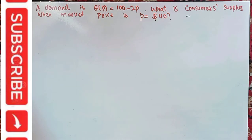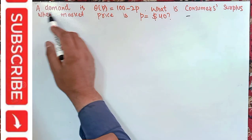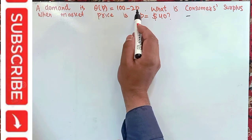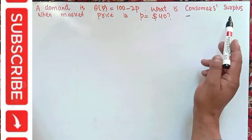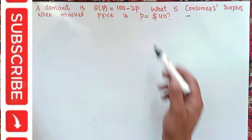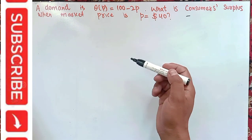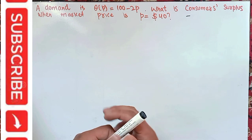In this video we will learn how to find the consumer surplus from a given demand function and the equilibrium price. We are given a demand function q(p) = 100 minus 2p, where q is the quantity and p is the price. We have to find the consumer surplus when the market price p is equal to 40 dollars.